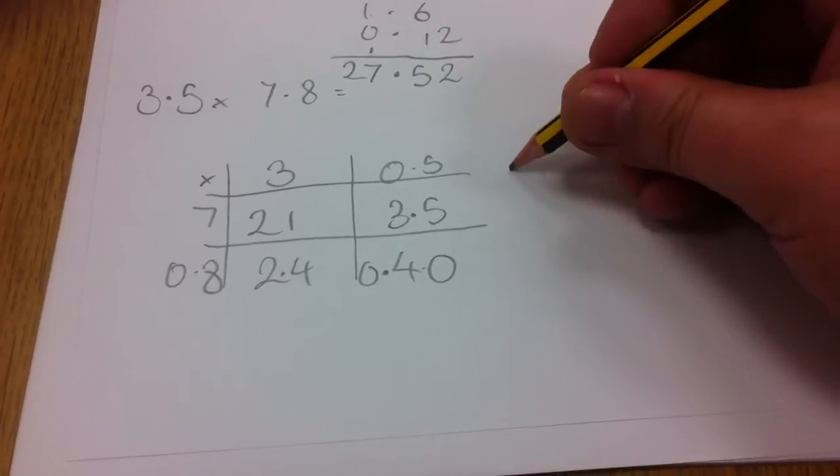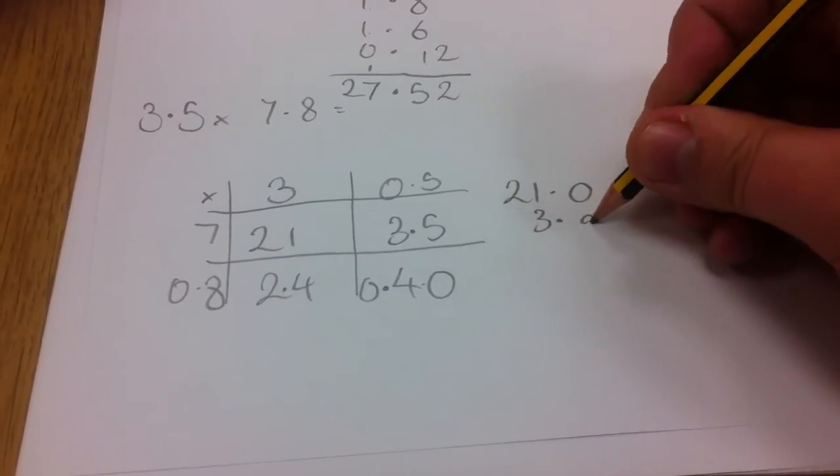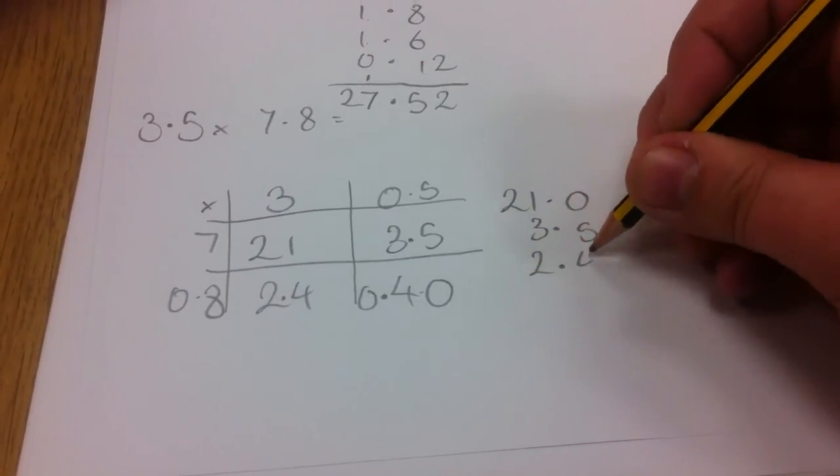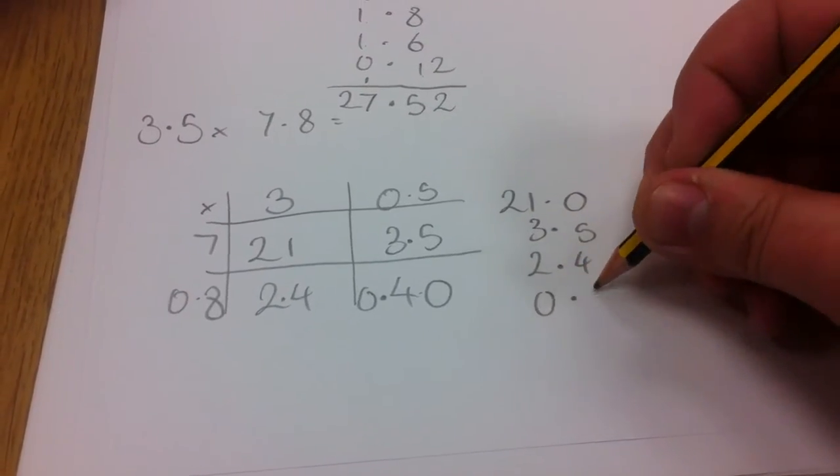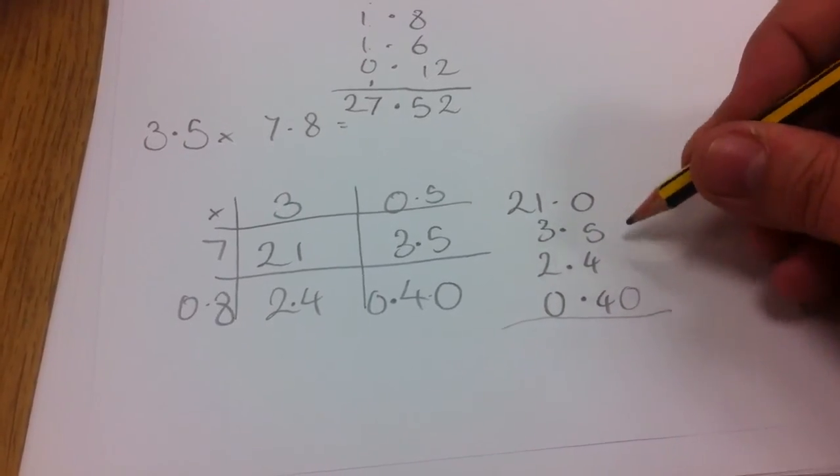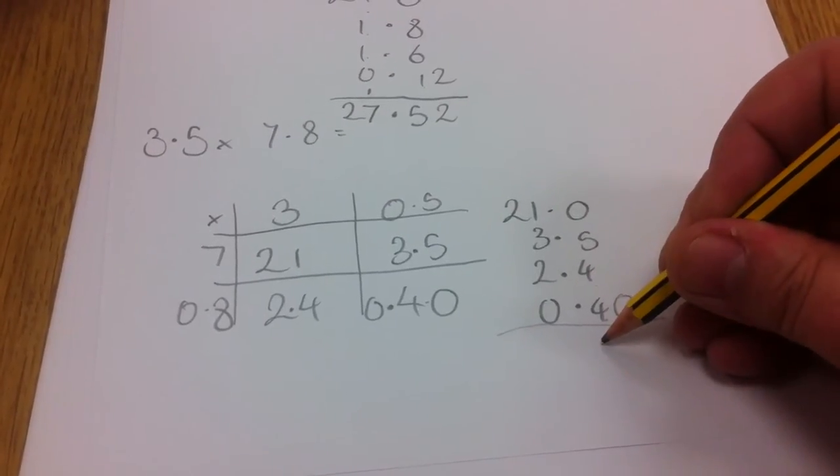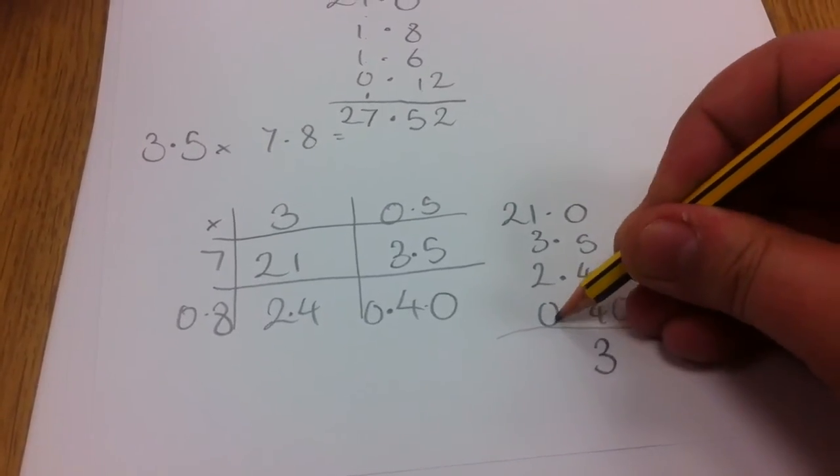And all I've got to do is add up those numbers. So that's 21, 3.5, 2.4 and 0.4, 0. So we can even absorb the 0. 5 plus 4 is 9 plus 4 is 13. So it's 3. Carry the 1.